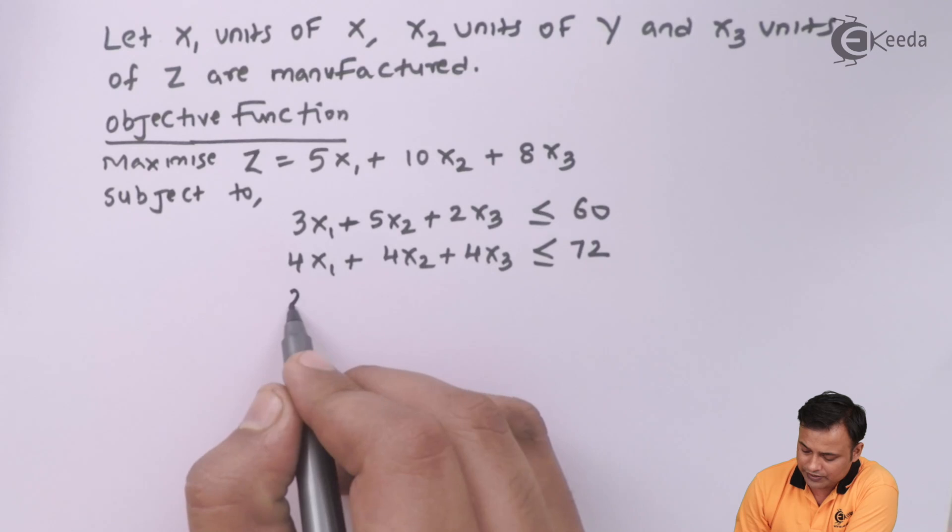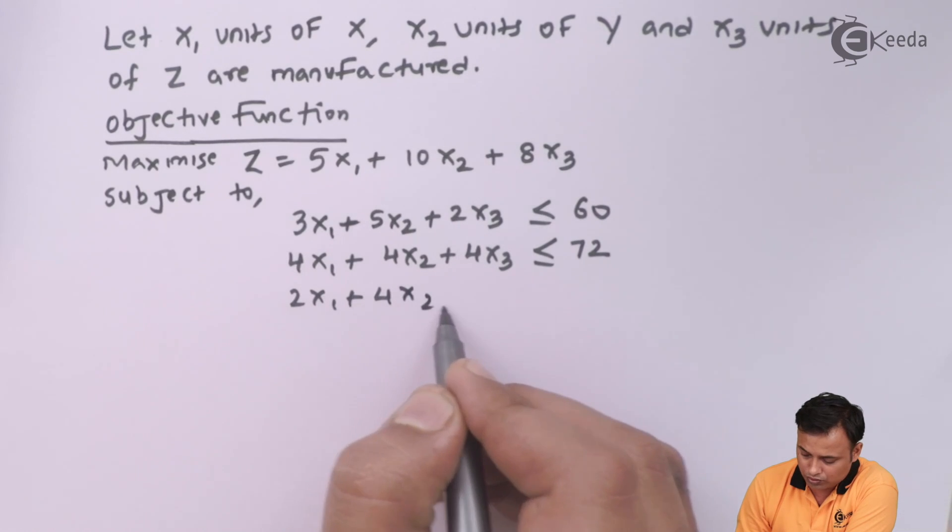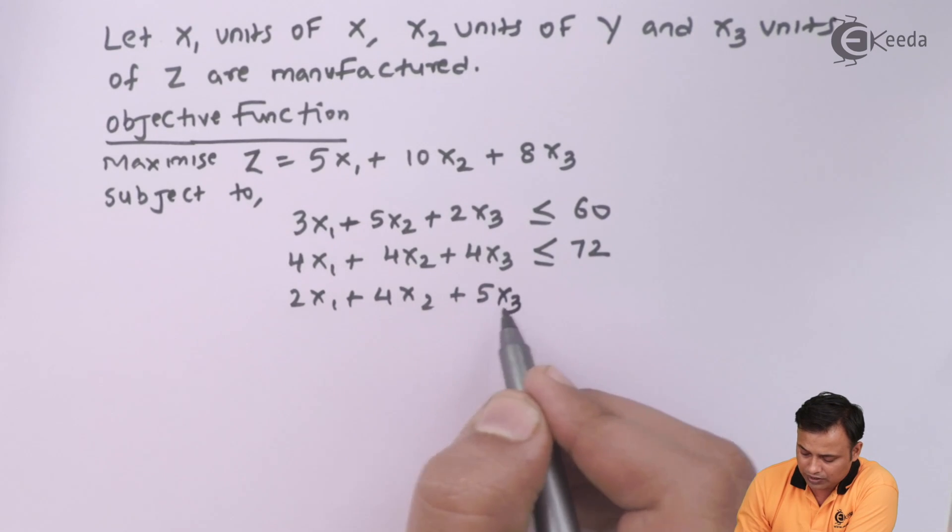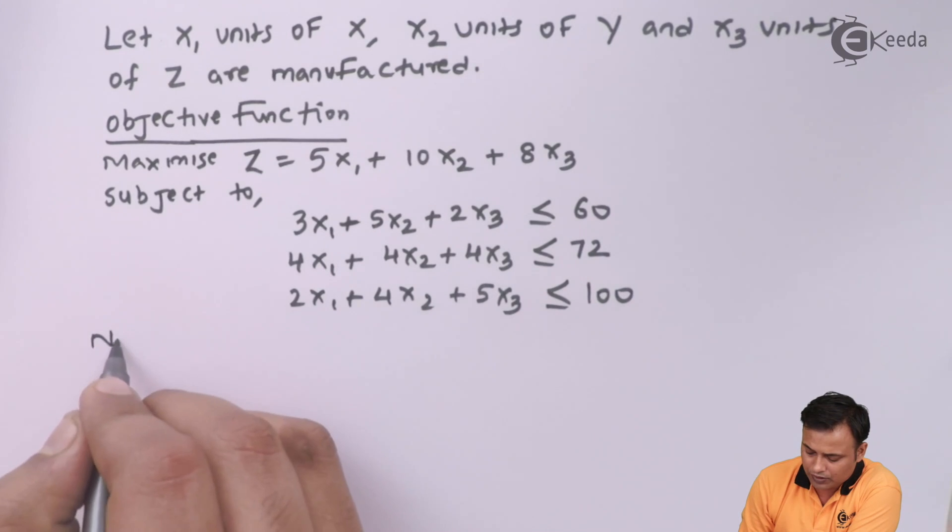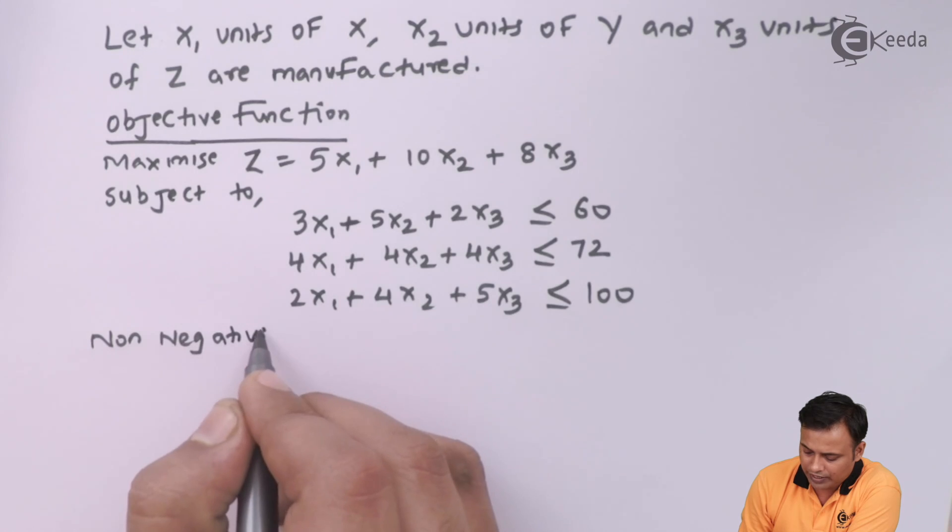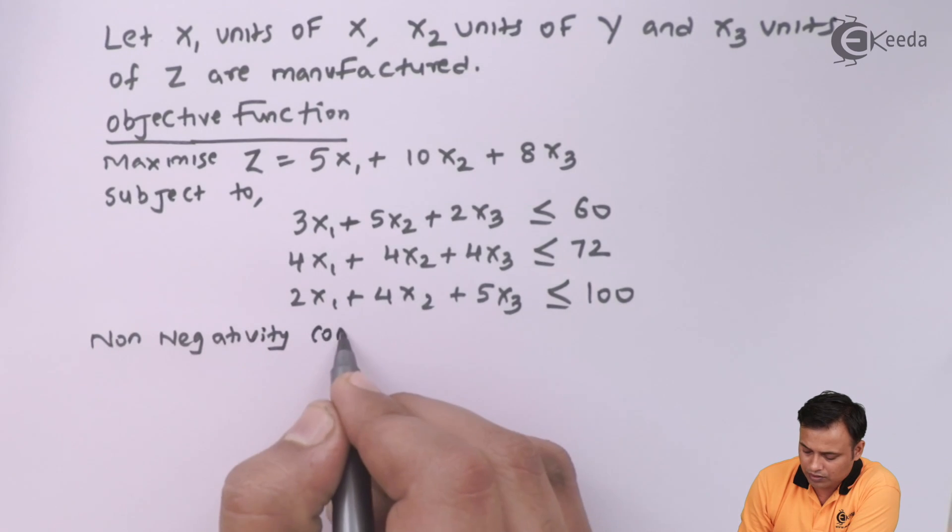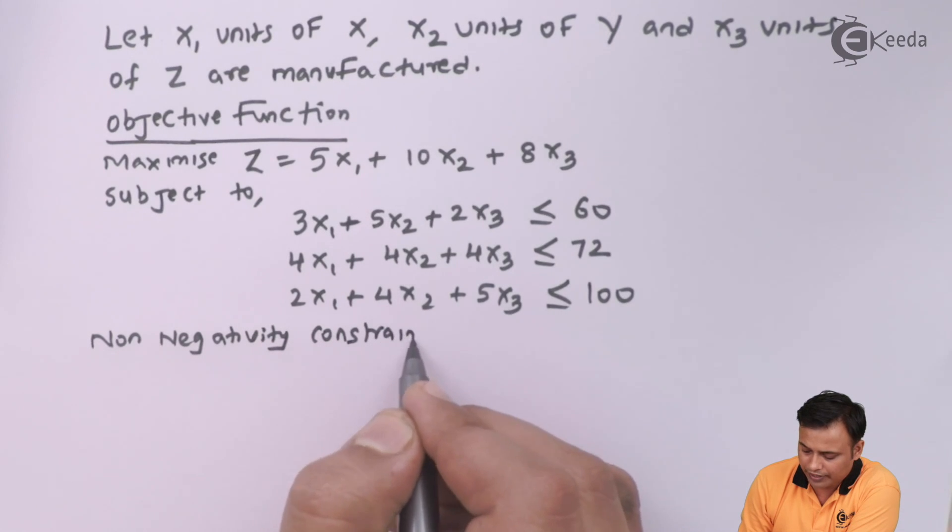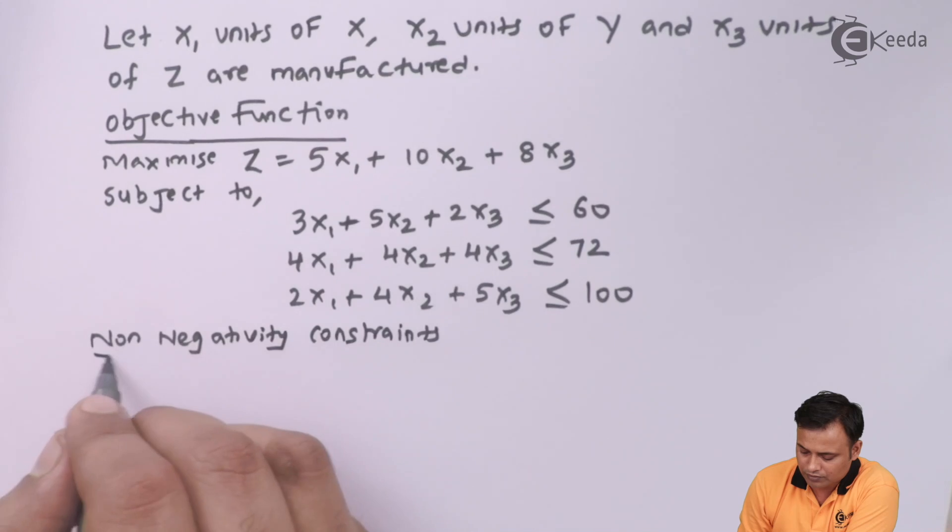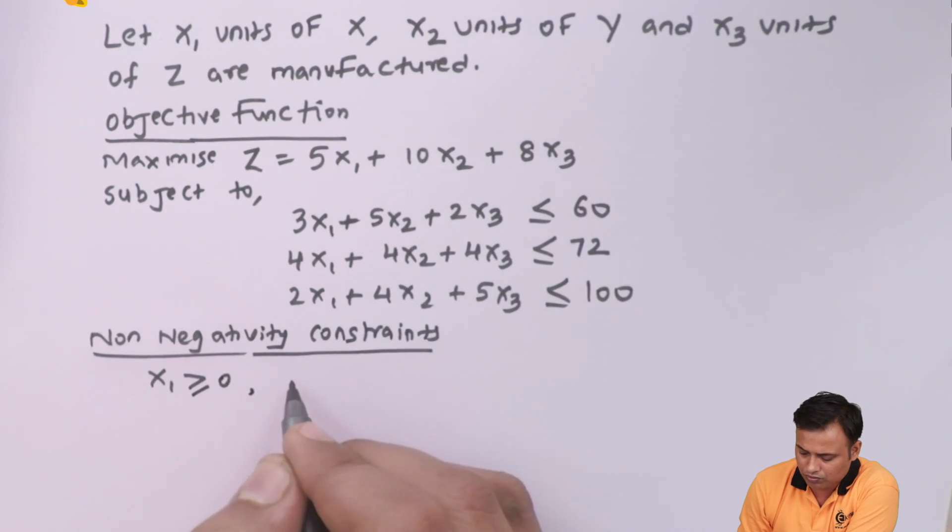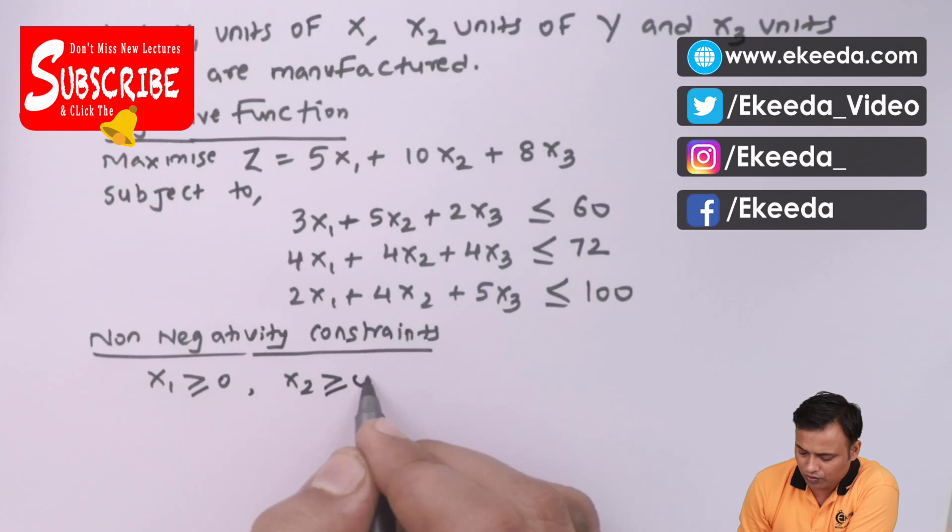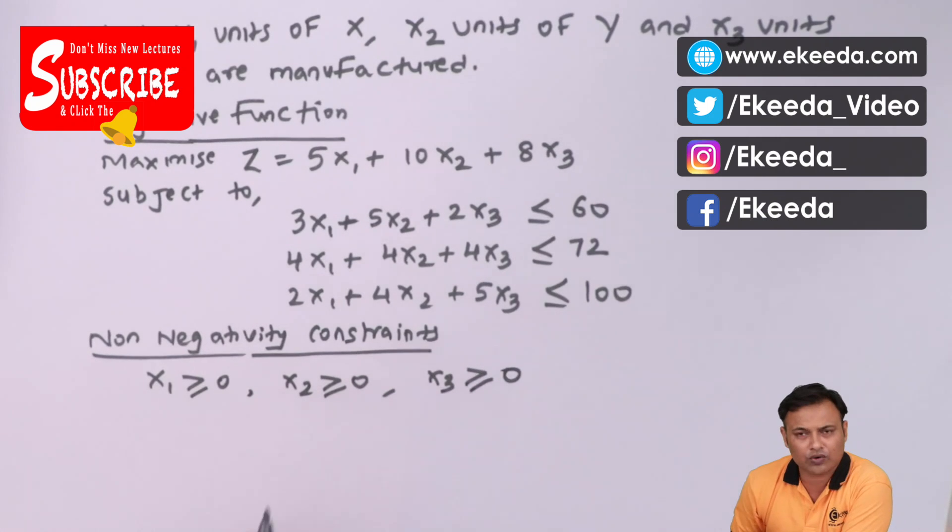And then I will have my non-negativity constraints which will be X1 more than equal to 0, X2 more than equal to 0, X3 more than equal to 0.